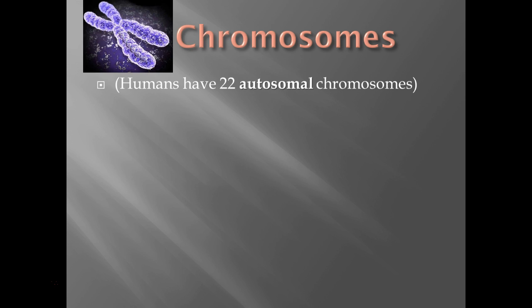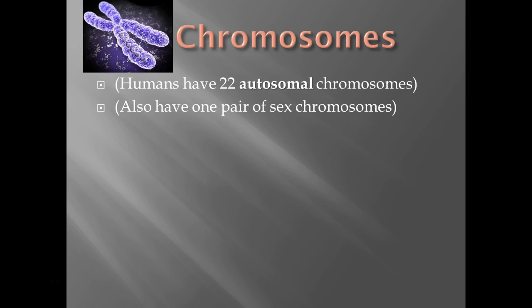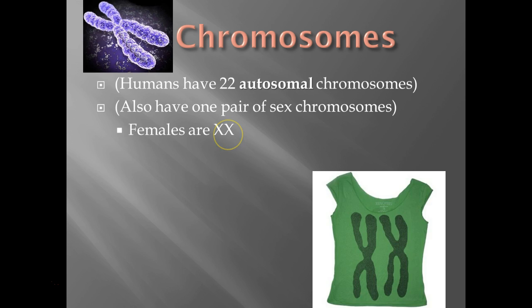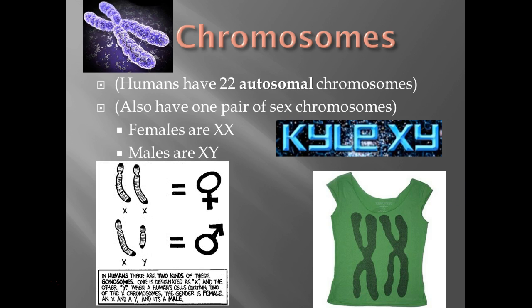Humans have 22 pairs of autosomal chromosomes. These are the ones that determine pretty much all of your traits. But that last pair are called your sex chromosomes — those are the ones that actually determine are you male or are you female. Females are XX, meaning they have two identical sex chromosomes, the X chromosomes. Males are XY, so they have different sex chromosomes.